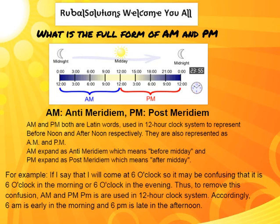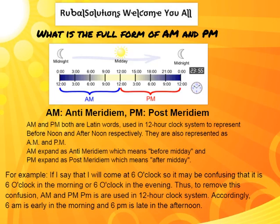For example, if you say that I will come at 6 o'clock, it will be confusing. Instead, you can say I will come at 6 AM, meaning morning, or 6 PM, meaning evening. Thus, to remove this confusion, AM and PM are used in the 12-hour clock system.